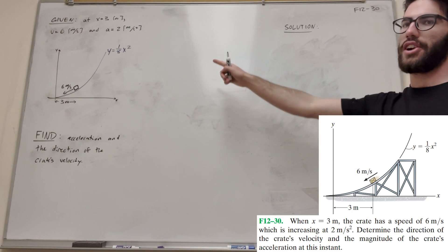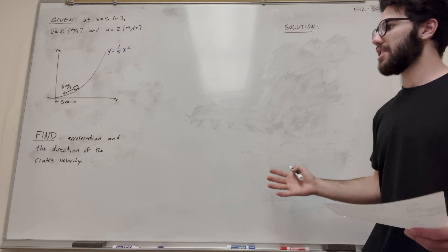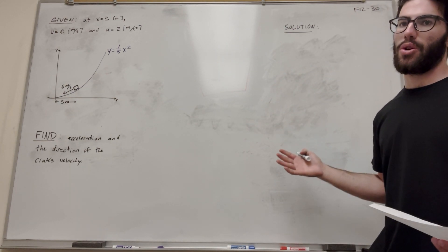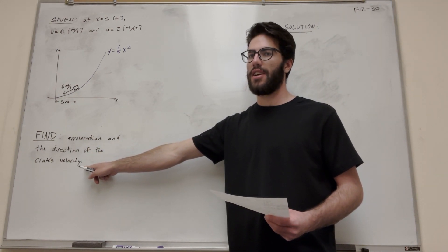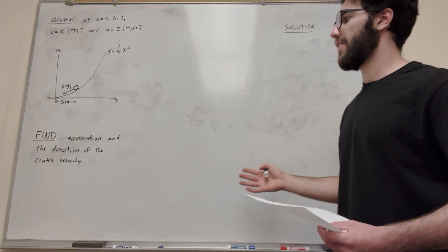And we're given velocity and acceleration at that time. So let's go ahead and get started. What's our first goal going to be? Let's go ahead and start the easy part, which is going to be the direction of the crate's velocity. So if we're going to find the direction, we're trying to find an angle.